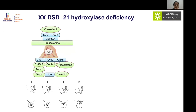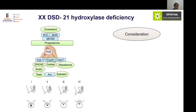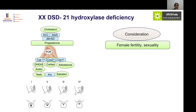Now we will discuss individual cases in detail to help guide gender assignment. First, coming to the most common form of DSD: XX DSD with 21-hydroxylase deficiency. In this case, a defect in 21-hydroxylase prevents formation of cortisol and aldosterone, resulting in excess androgens. The child has been exposed to androgens in intrauterine life causing virilization, which can be graded according to Prader staging.